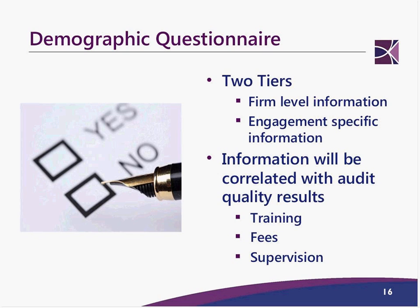The DOL demographic questionnaire will have two tiers covering both firm-level and engagement-specific information, including how much training the firm did, what fees they're charging, and supervision by the audit partner and manager. Their belief is that firms doing more training will have fewer deficiencies. There's also concern about fees — too many firms are using these as loss leaders, with plan sponsors pushing back on fees, potentially causing auditors to cut corners.